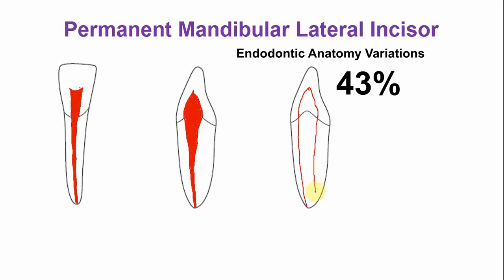This means the canals exit separately from the root apex. Here you can see one apical opening, and these are the two apical foramina.